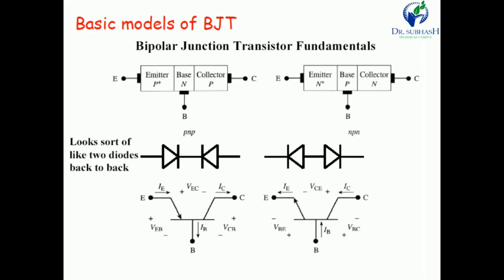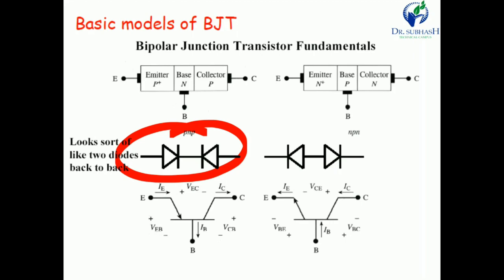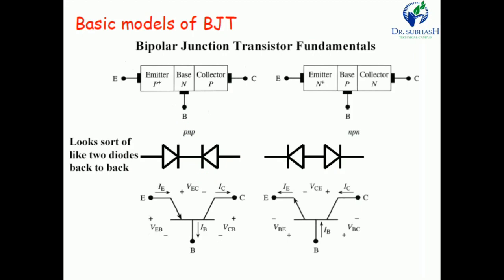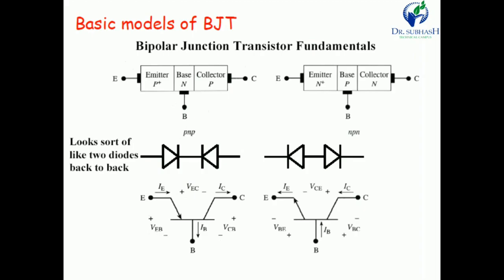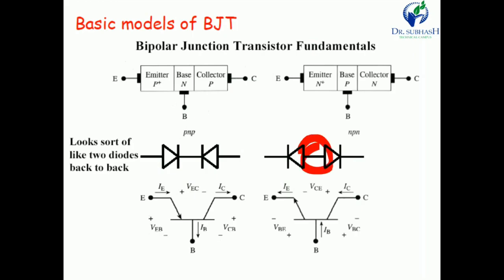This figure shows how to design a transistor using diodes. A diode is a two-terminal device with anode and cathode, containing P-type and N-type material. When two diodes are connected back-to-back with both cathodes connected together and the anodes at different ends, it works as a PNP transistor, with N-type common between the two diodes. For an NPN transistor, both anodes are connected together with cathodes at different ends.